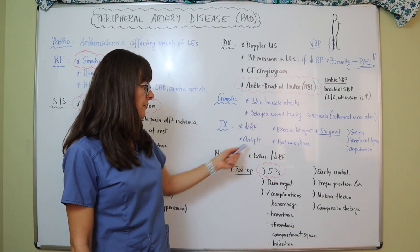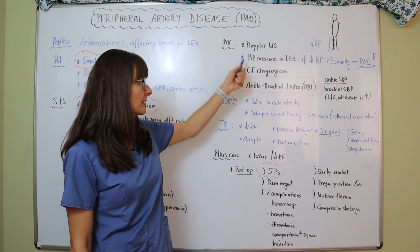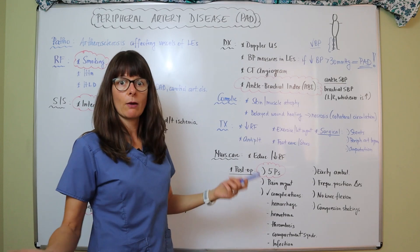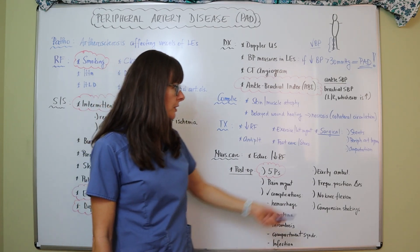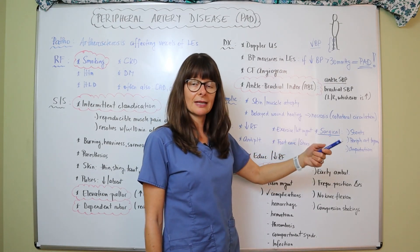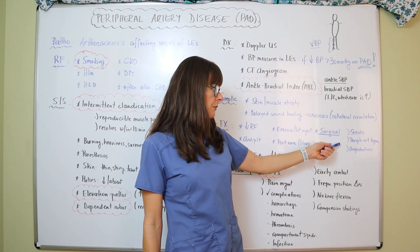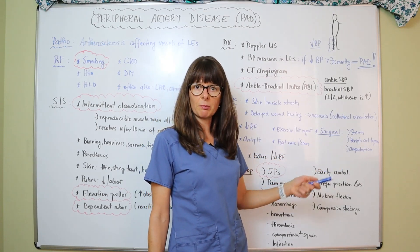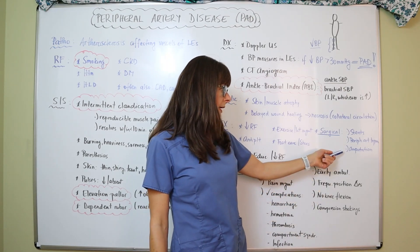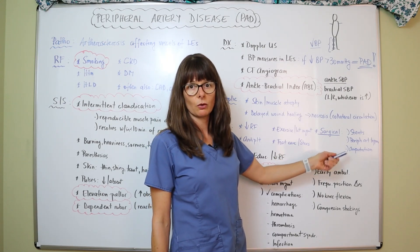If conservative management fails and the patient has significant PAD as evidenced by diagnostic tests, or is so symptomatic that they cannot ambulate at all, surgical options exist. Just like in the coronary arteries, stents can be placed to open clogged arteries, or peripheral artery bypasses can be created. In severe cases where necrosis has occurred, amputation may be necessary.